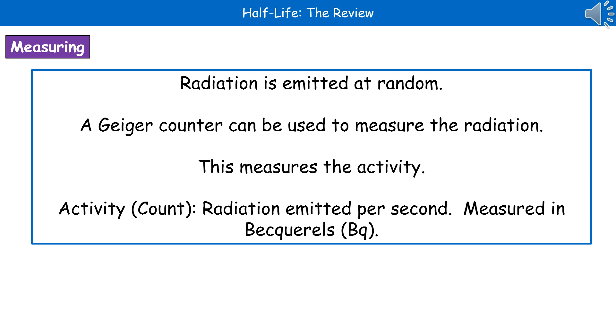The activity is the radiation that's emitted per second and is measured in the units called Becquerels, which are given the symbol capital B, lowercase q.